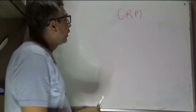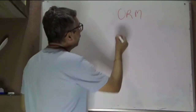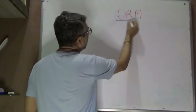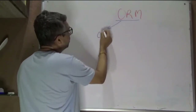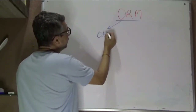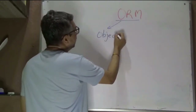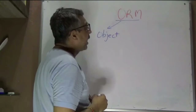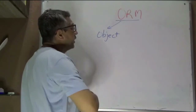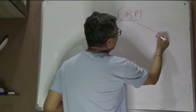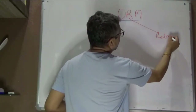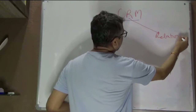In ORM, O stands for the object side and R stands for the relational side of things.